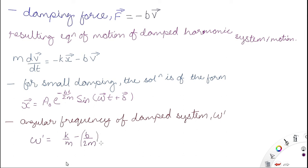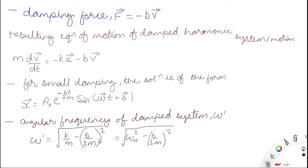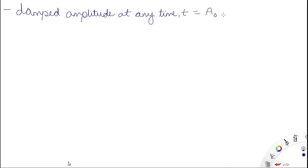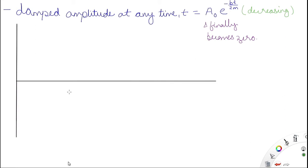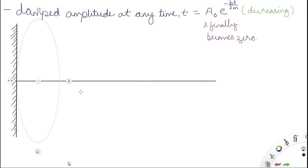The angular frequency of the damped system is: ω' = √(k/m − (B/2m)²), where k/m is ω_n² (the natural angular frequency in rad/s) and B/2m is also in rad/s. The damped amplitude at any time t is: x = A₀ · e^(−Bt/2m), which decreases with time.